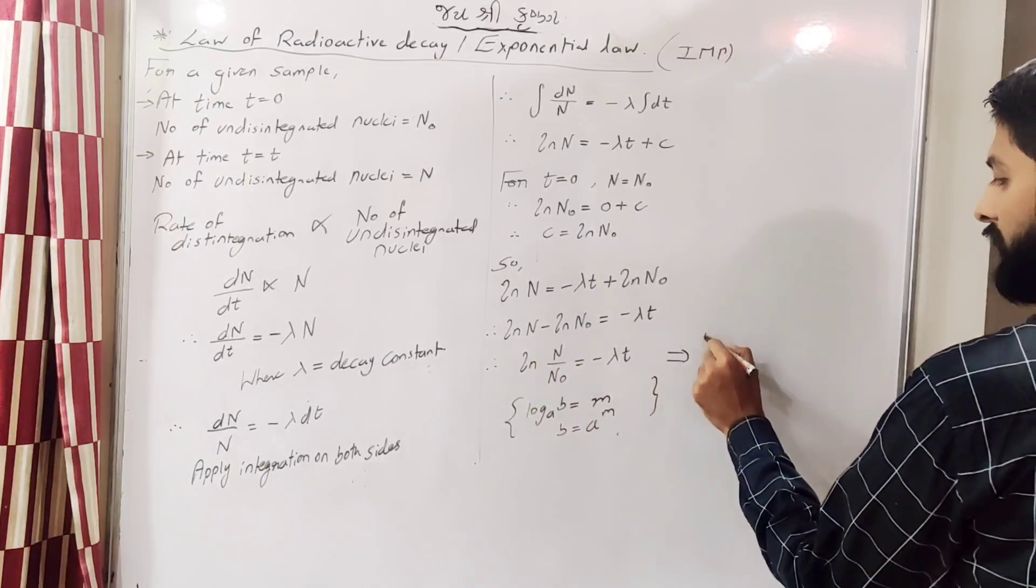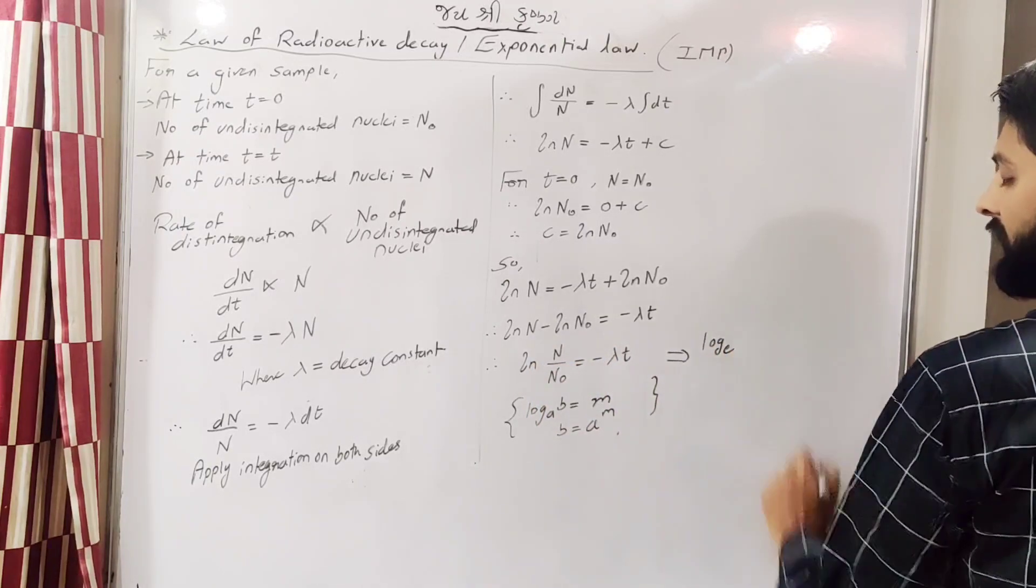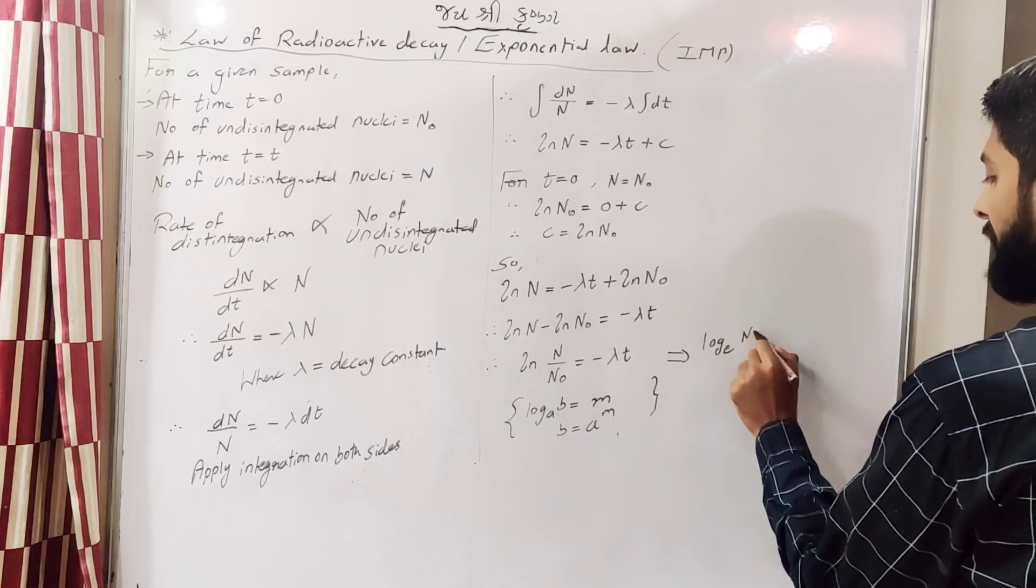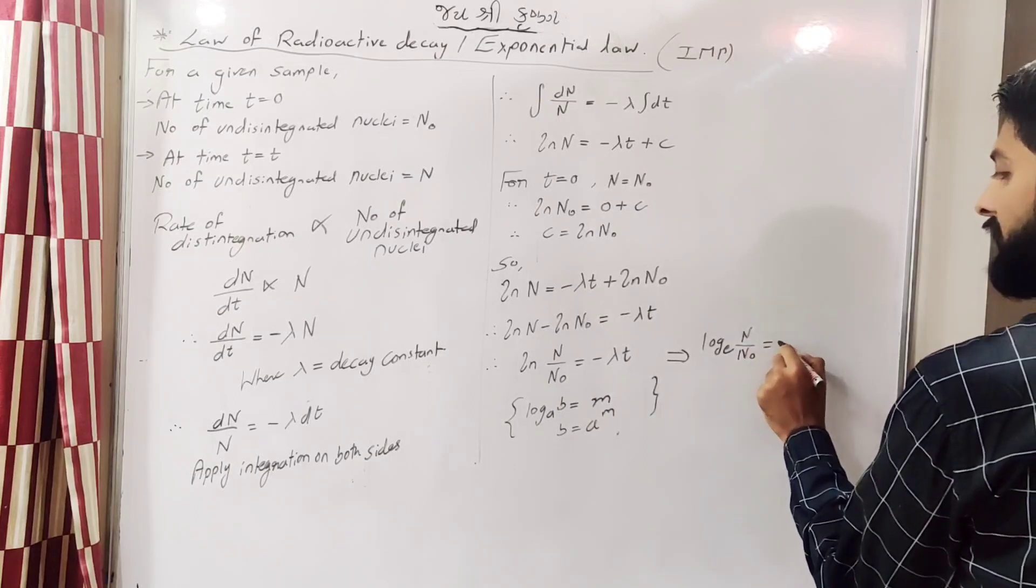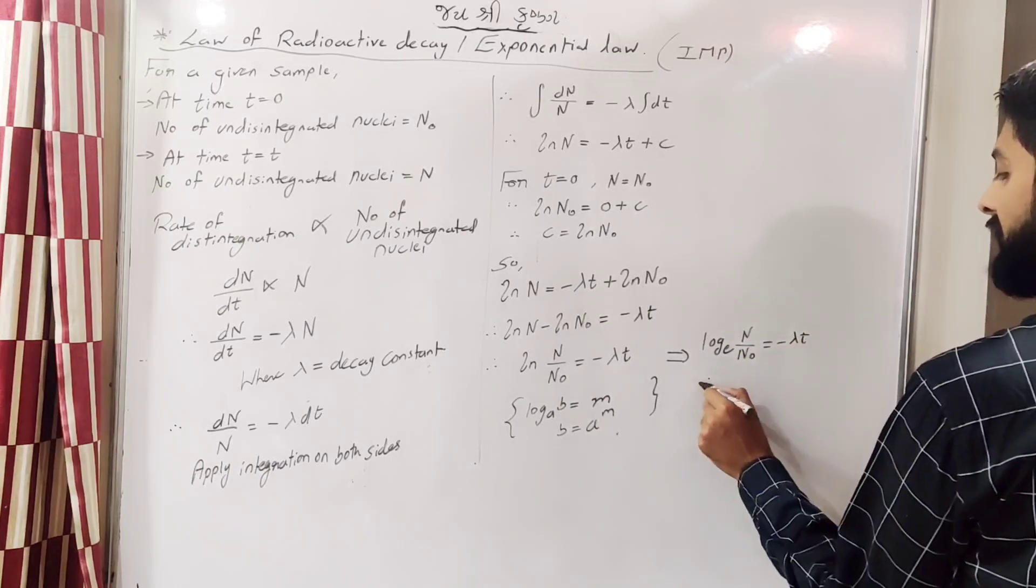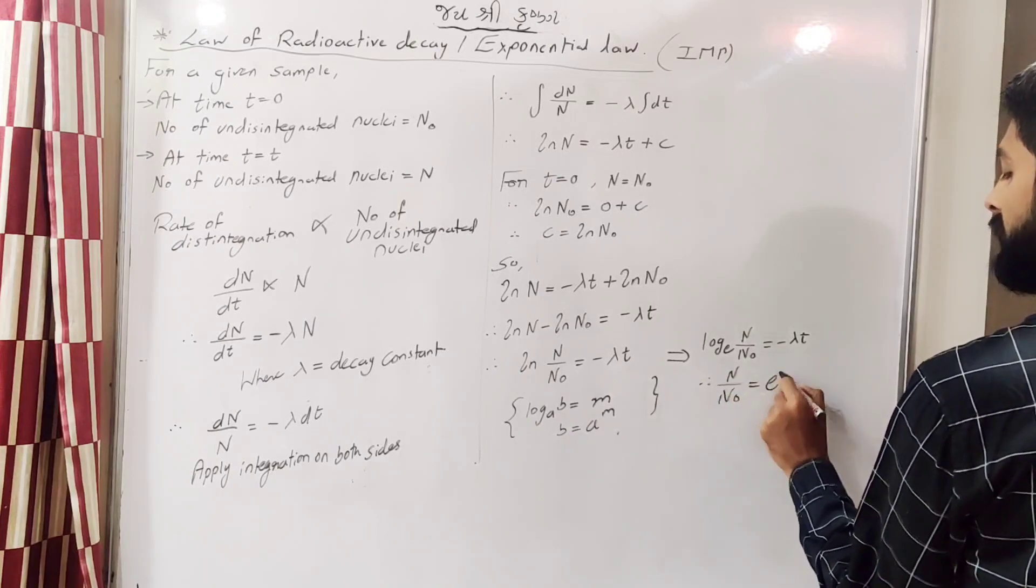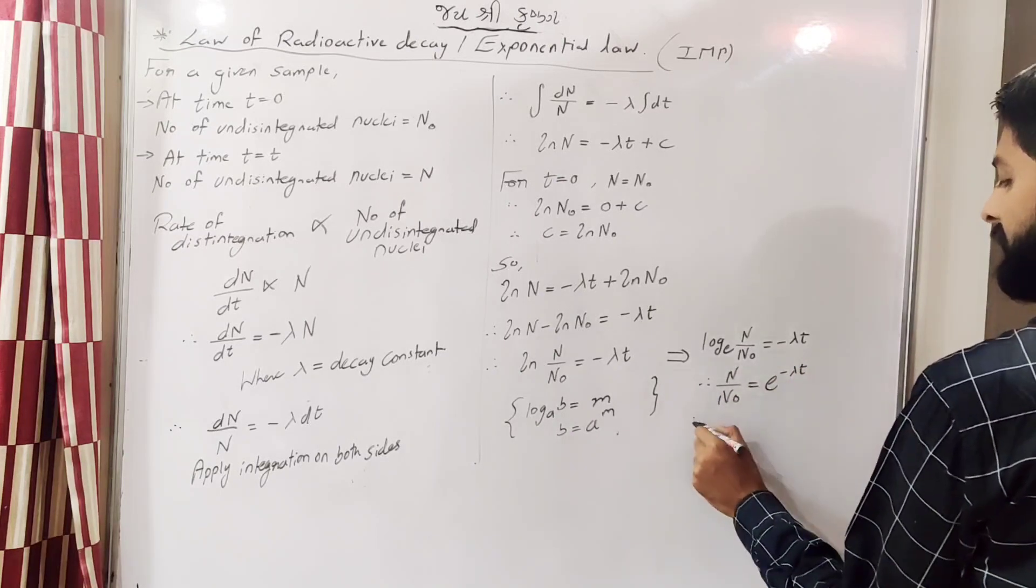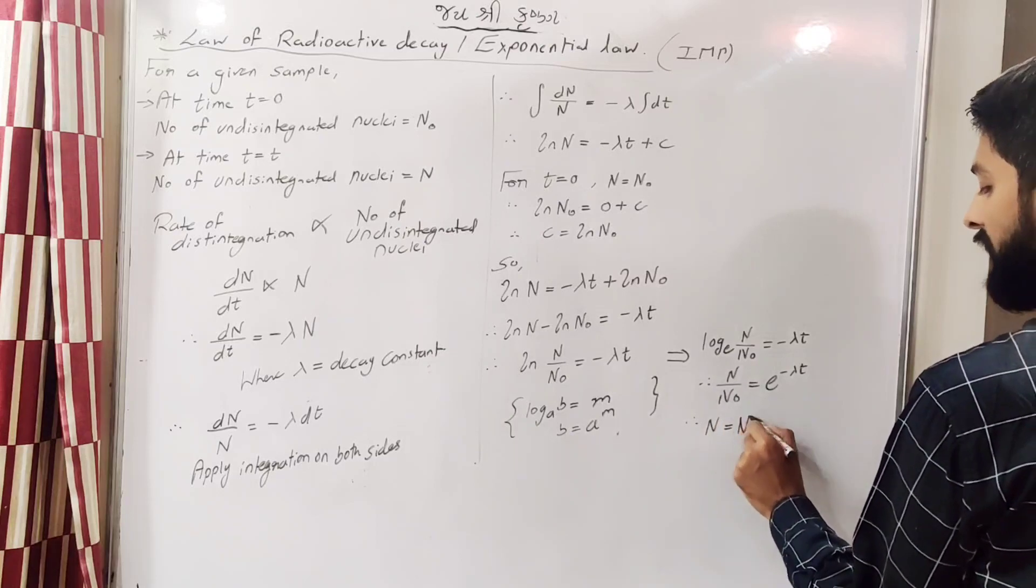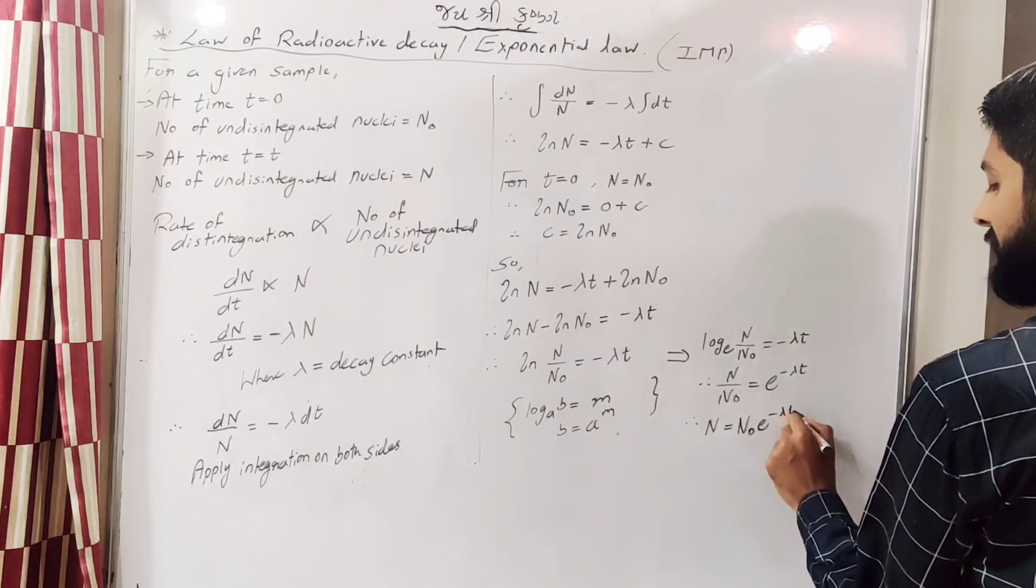Since ln is natural log with base e, n/n0 equals e to the power minus lambda t. So n equals n0 times e to the power minus lambda t.